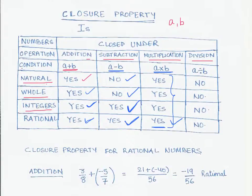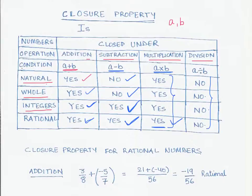Now let us look at division. You can see that the division column has all no's. When we take any two natural numbers and divide them, the result is not necessarily a natural number. In fact, all four types — natural, whole, integers, and rational — are not closed under division. Whenever you divide two numbers of the same type, the result will not necessarily be that same type of number, and we will prove this later.